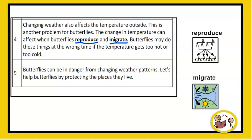The change in temperature can affect when butterflies reproduce and migrate. Butterflies may do these things at the wrong time if the temperature gets too hot or too cold. Butterflies can be in danger from changing weather patterns. Let's help butterflies by protecting the places they live.